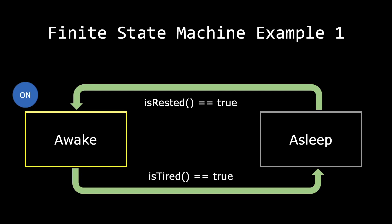We have another function called is_rested. As long as is_rested is equivalent to false, we will be in the asleep state. However, once our is_rested function returns back true, we will then switch to the awake state. You can see our finite state machine can change between two states: the awake state and the asleep state.